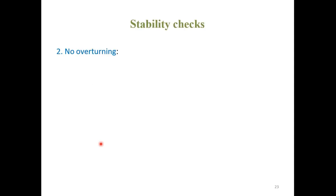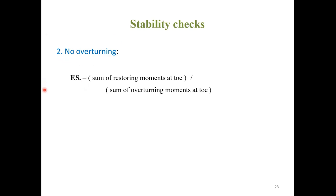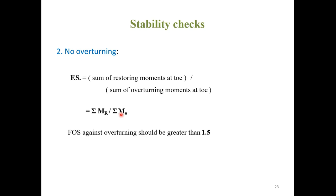Second stability check — no overturning: The factor of safety is the sum of the restoring moments at the toe divided by the sum of the overturning moments at the toe: FOS = ΣM_R / ΣM_O. This should be greater than 1.5.